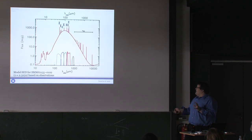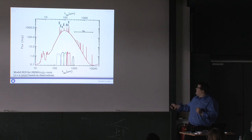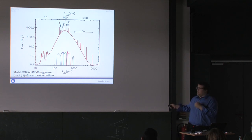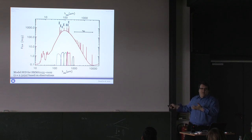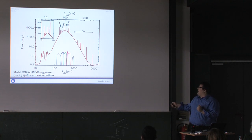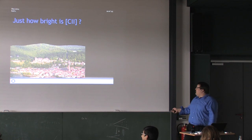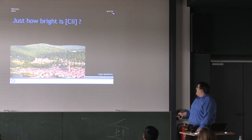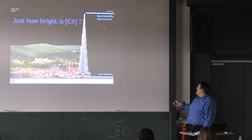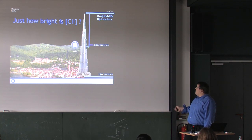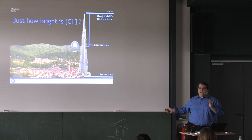How extreme are these lines? Looking at a model SED with relative strengths based on actual observations, in a log plot the line-to-continuum ratio looks modest. But in a linear plot, the line becomes enormous relative to the continuum — it's like if Heidelberg sits at 130 meters above sea level and you built the Burj Khalifa at 830 meters on top — that building's roof would be 400 meters above the institute. These lines are insanely bright.